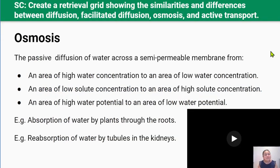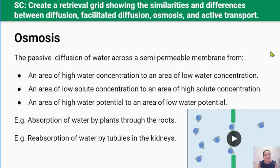So, osmosis — what's osmosis? Osmosis is the net movement of water across a semi-permeable membrane from an area of high concentration to an area of low concentration. Osmosis is actually a special case of diffusion — it's a term used when the substance diffusing across a cell membrane is water.